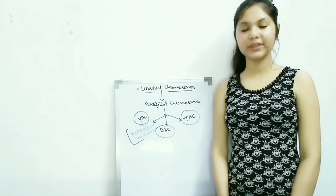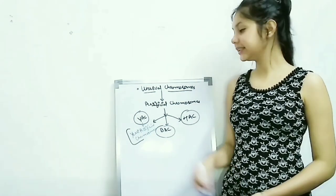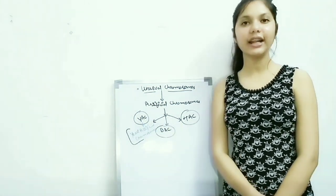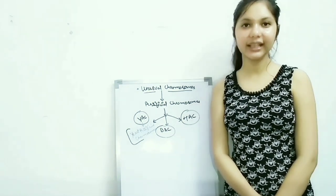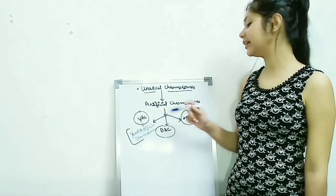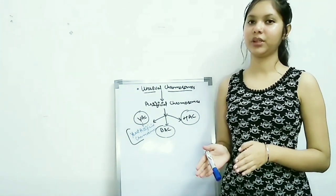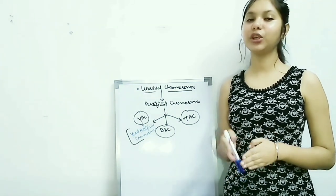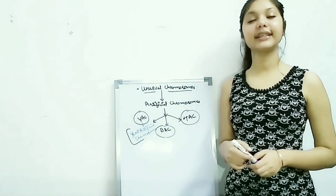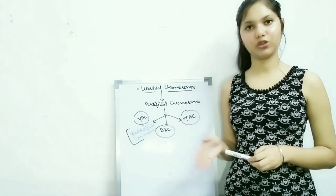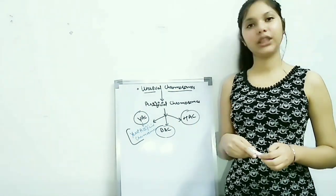Artificial chromosomes are further of three types. The first one is YAC, that is the Yeast Artificial Chromosome. Another one is BAC, that is the Bacterial Artificial Chromosome. And the third type is HAC, that is the Human Artificial Chromosome. In this video, I will explain what is YAC — the Yeast Artificial Chromosome.